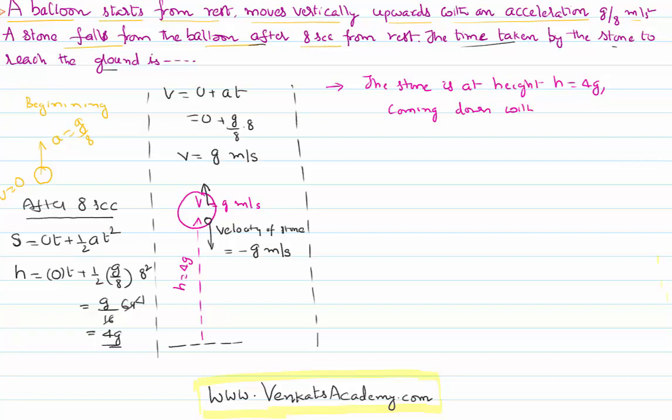With initial velocity -g meters per second, and once it falls due to gravity, the acceleration acting on it is acceleration due to gravity, which is g. Therefore, for the stone...